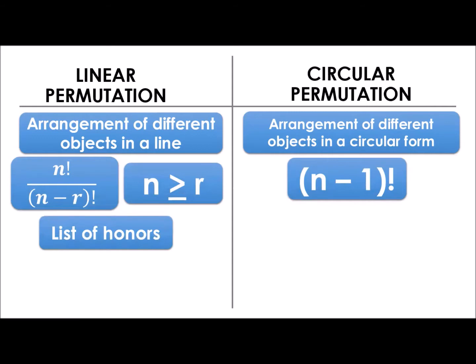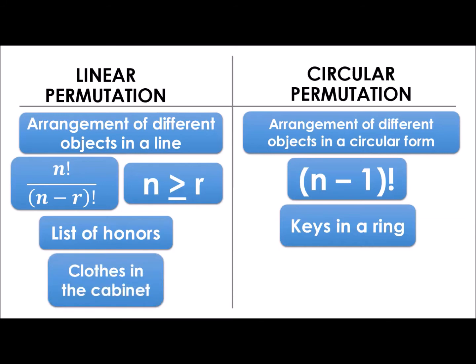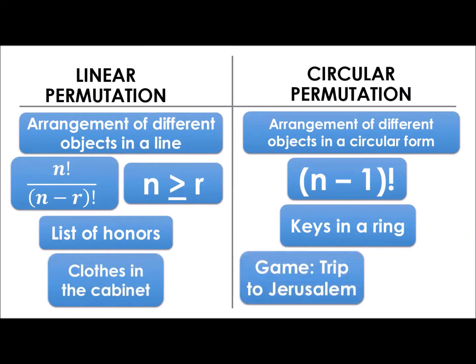Let's have illustrative examples. The list of honors is a linear permutation. The keys in a ring — yung mga susi na nanandoon sa ring, ang ring ay pabilog — so that is circular permutation. Clothes in the cabinet are obviously in linear form. The game entitled 'A Trip to Jerusalem,' the arrangement of chairs in that game is in circular form.